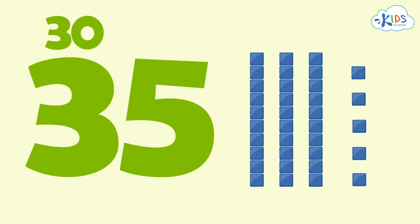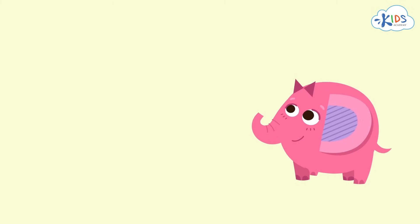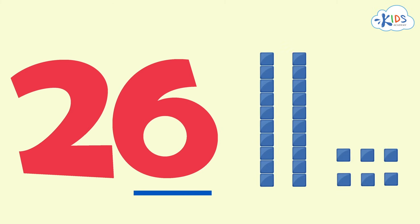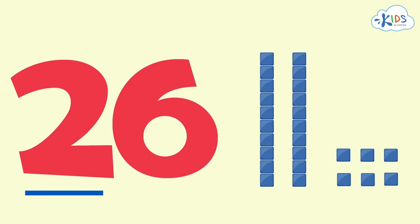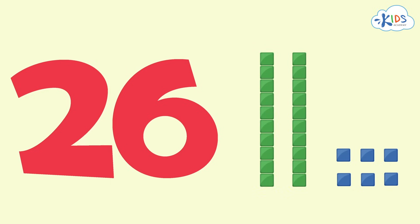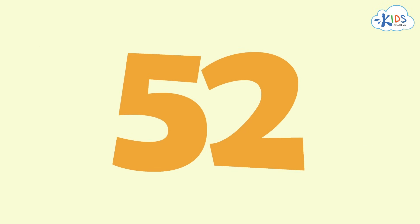Another trick you can remember is to just put a zero at the end of the number. The three in 35 is represented by three tens blocks, which equals 30. In the number 26, the six is in the ones place and the two is in the tens place. The six is worth just six, represented by six cubes. The two is worth 20 because it is in the tens place, represented by two long tens blocks. You can count by tens using the base-ten blocks or just count in your head: 10, 20.